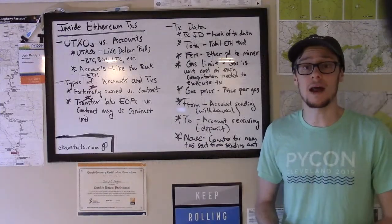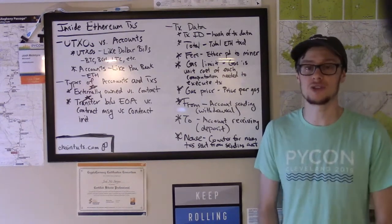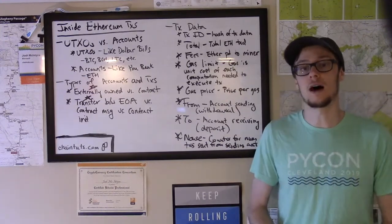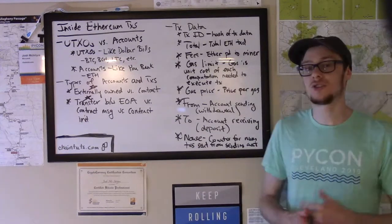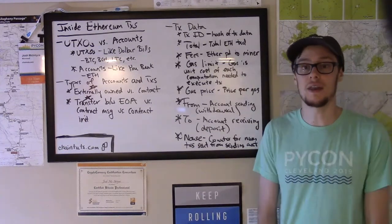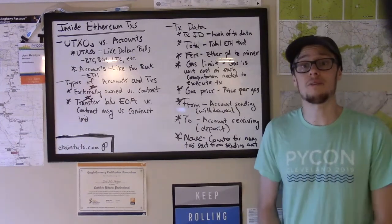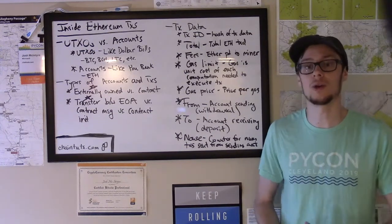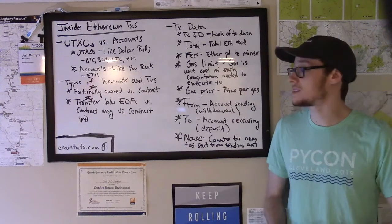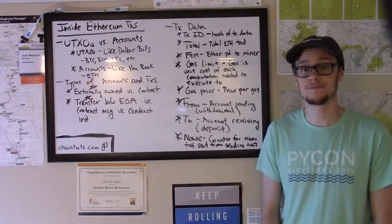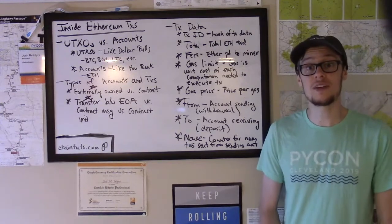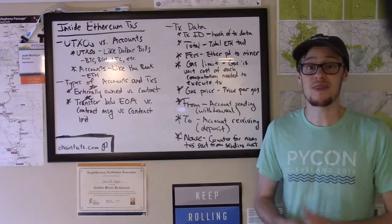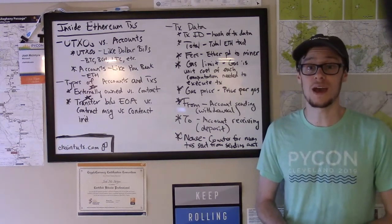Ethereum and account-based blockchain transactions are a little bit simpler to understand than UTXO-based blockchains like Bitcoin, Bitcoin Cash or Litecoin. It's just a different model — a different way of storing state on the network. Things are complicated a bit by the fact that Ethereum is also a distributed computing platform with contract owned accounts, but in general an account-based system is fairly intuitive. This tutorial is available as a written article on the Chain Tutorials website — thank you very much for listening and tune back for more soon.